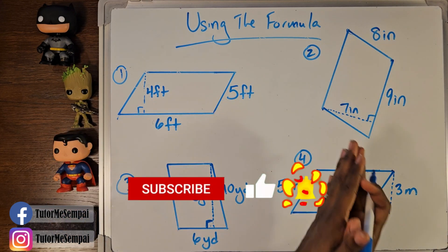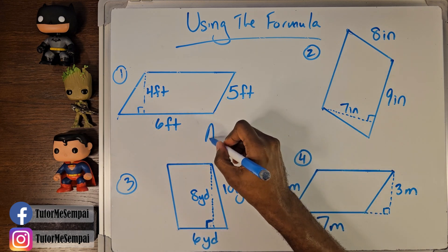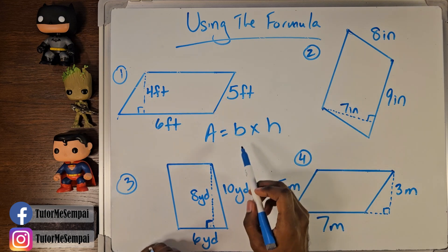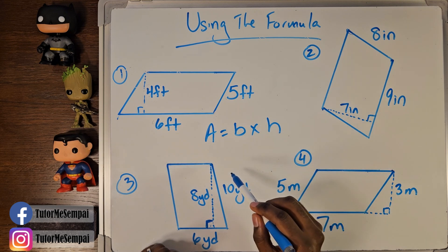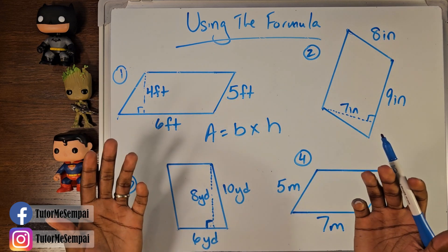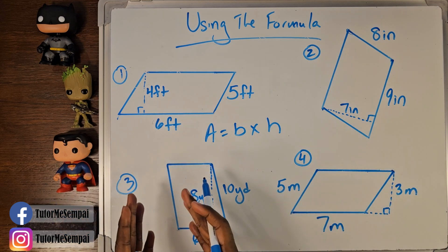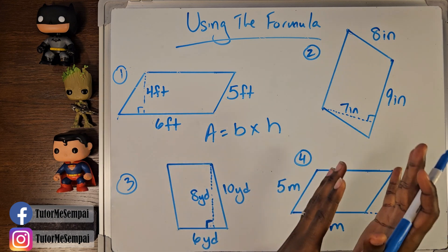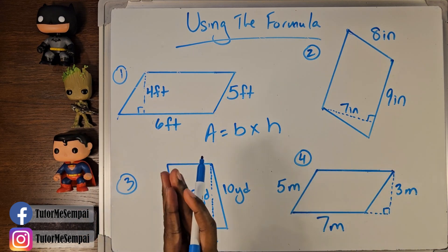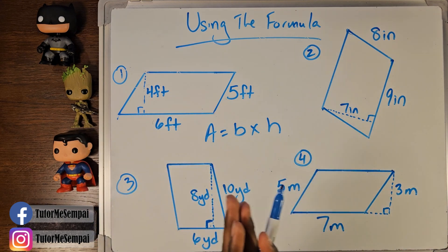Today we're going to be finding the area of our parallelogram, starting with the formula: A equals B times H — area equals base times height. This is our formula when we find the area of parallelograms. Base is going to be easy — it's any one of the sides of your parallelogram; you pick a side and that can be the base. The kicker is your height. Your height is choosy, so you can't just pick anything to be your height. None of the sides of the parallelogram will be your height.